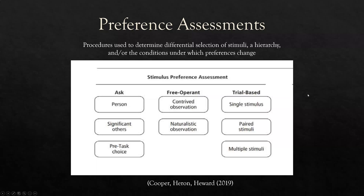We're studying preference assessments today. They're procedures for determining what people select given certain circumstances. Environmental conditions affect our preferences, and we can establish hierarchies of preferences. From those hierarchies we can determine: are they reinforcing? Are they going to work as motivators? The three types we're going to look at are asking about stimulus preference assessment, free operant stimulus preference assessment, and the most common type — trial-based preference assessments.